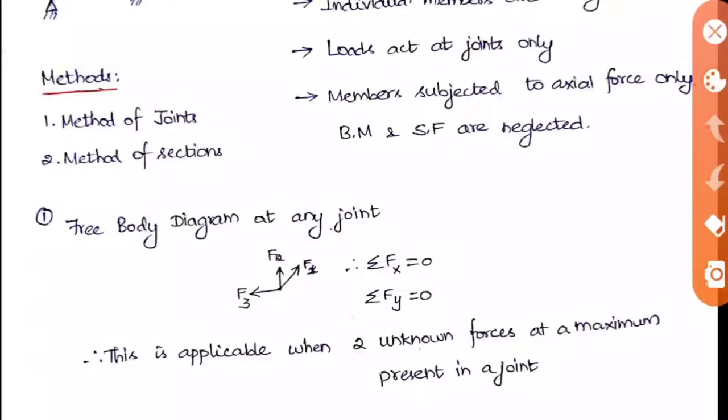Here are the conditions: sigma fx and sigma fy should be equal to zero. This is applicable when only two unknown forces prevail in a joint, because we have only two equations so it can solve only two unknowns. If it is more than two, we cannot use this method of joints.